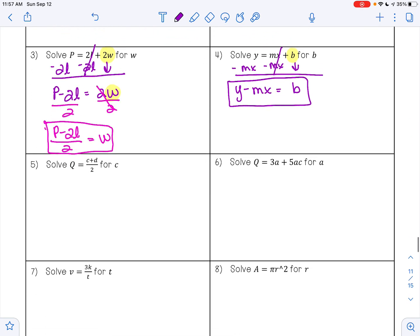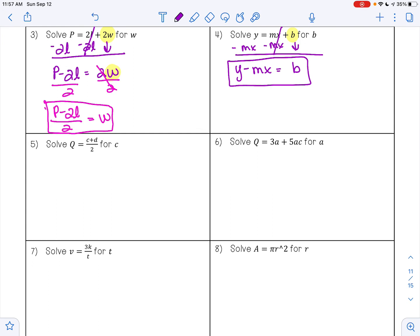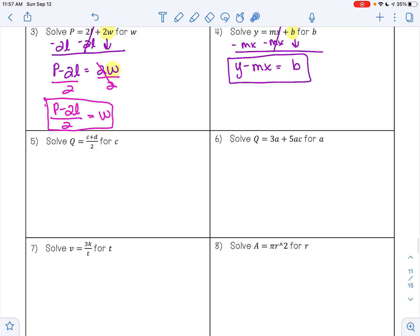On example 5, it says solve Q equals C plus D divided by 2 for C. When you have a problem like this that has the variable that you want to get alone in a fraction, you need to get rid of that denominator first and make it not a fraction anymore. Having this denominator here is just like saying we are dividing by 2. How do I undo division? Multiplication. So I'm going to multiply both sides by 2. 2 times Q is 2Q, and 2 divided by 2 is 1, so that leaves me with C plus D.